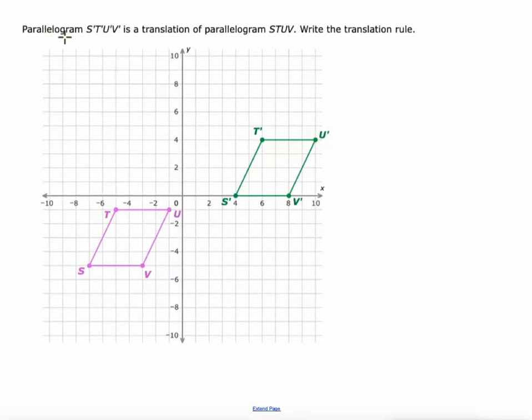So this says parallelogram S'T'U'V' is a translation of parallelogram STUV. Write the translation rule.